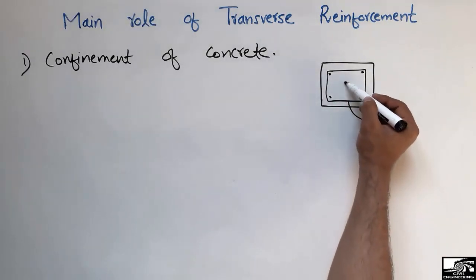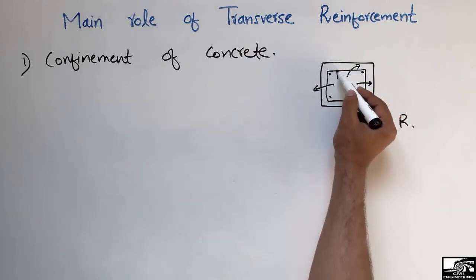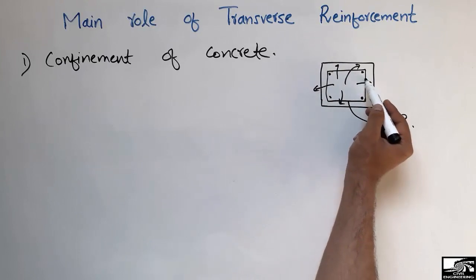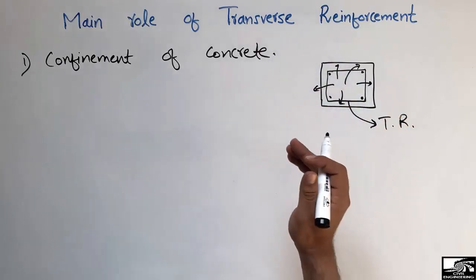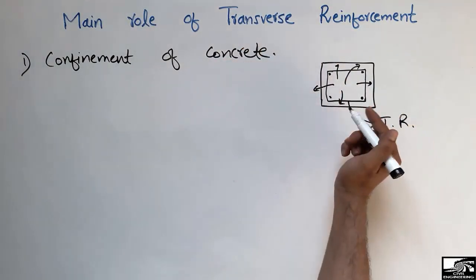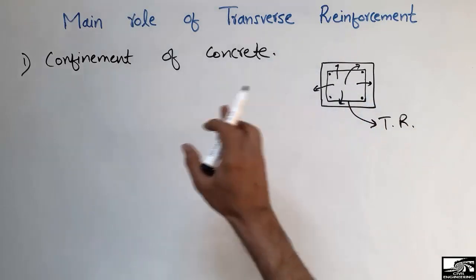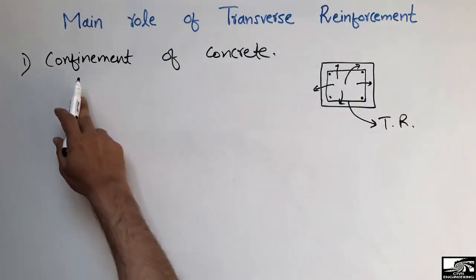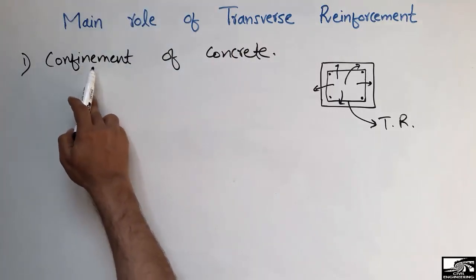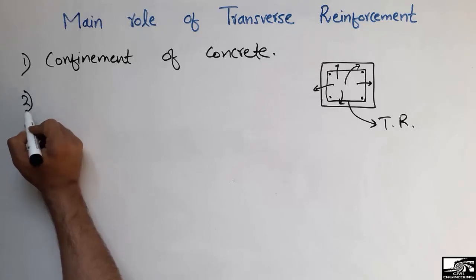Upon loading, the concrete does not move outside from this enclosed zone because the transverse reinforcement confines the concrete from every direction. The concrete is not allowed to move outside this box. This is the first main purpose of transverse reinforcement — it provides confinement of the concrete.